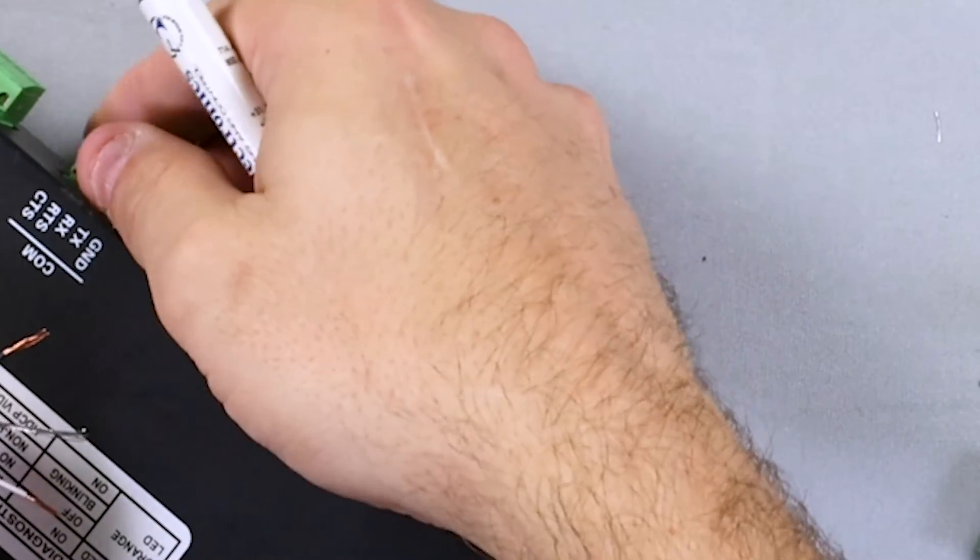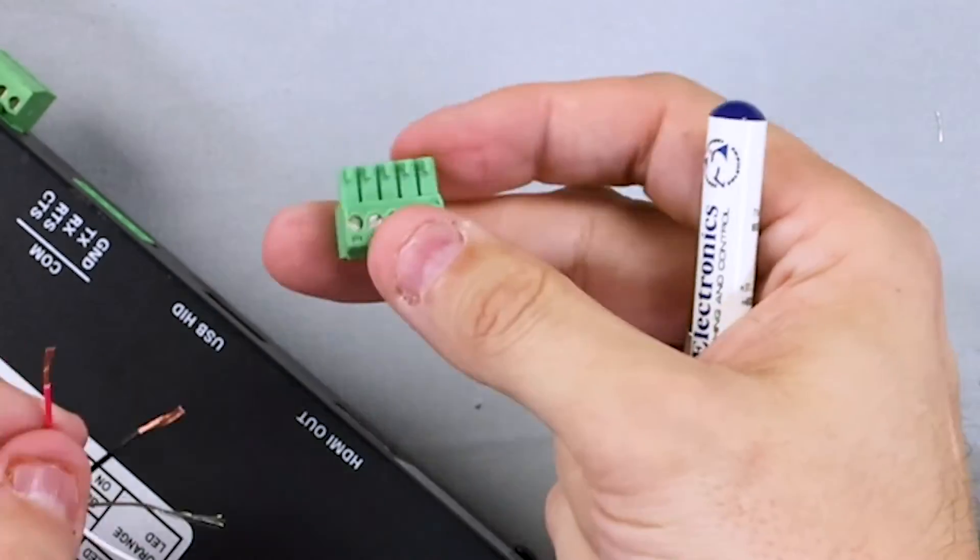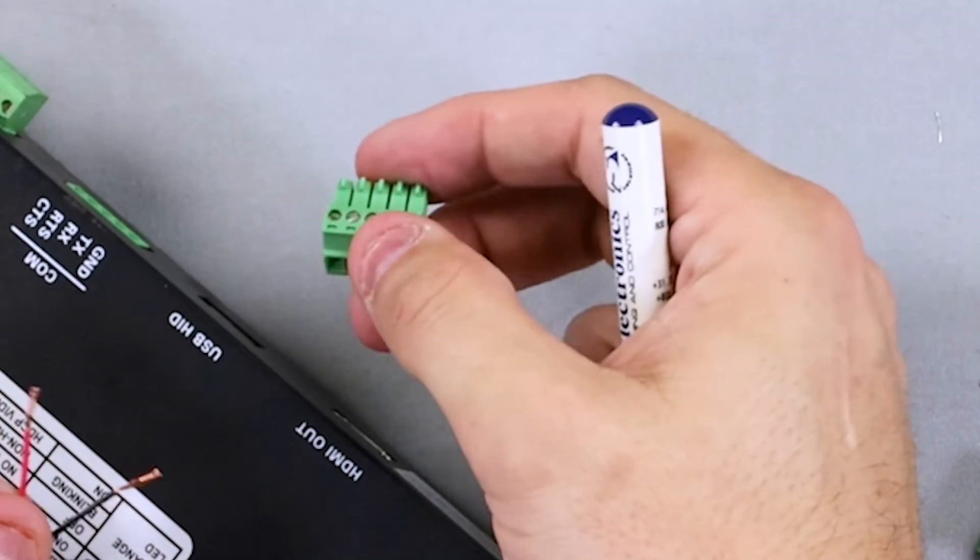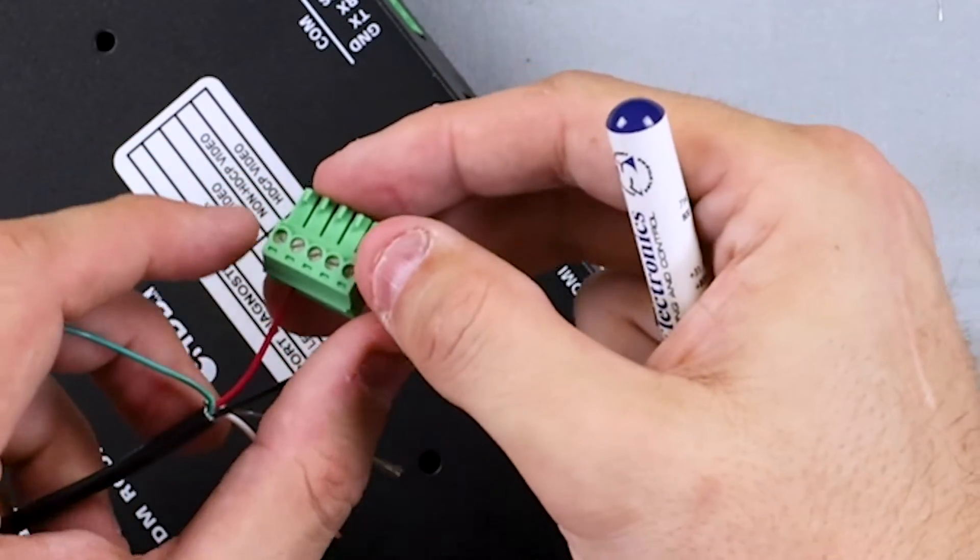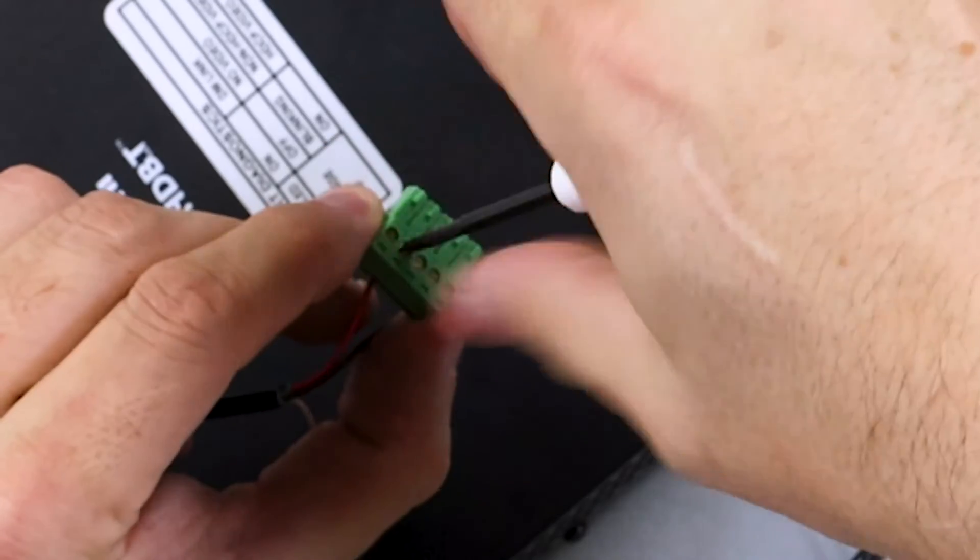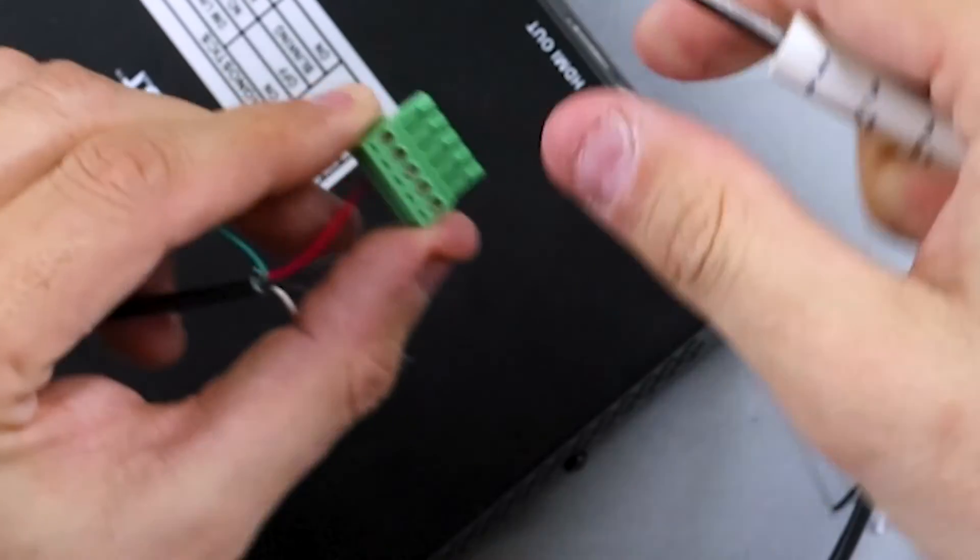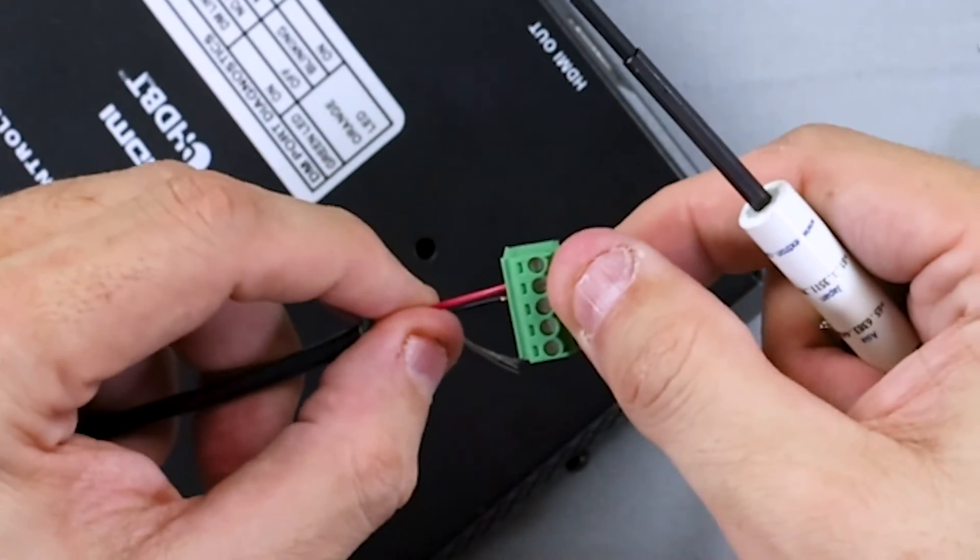If I place on one side, I'll use this Phoenix to show what's going in. According to our device, our transmit is the TX. I'm going to use red for TX on this side, close that down. Once you do have a good connection, give it a little pull.